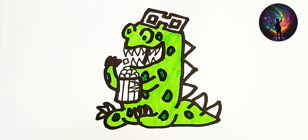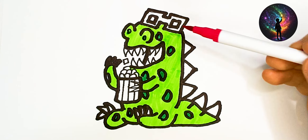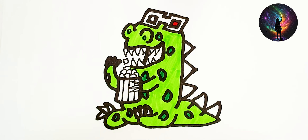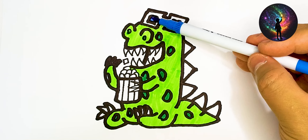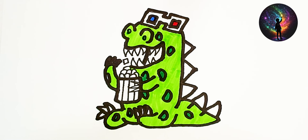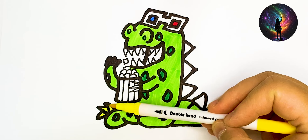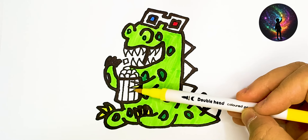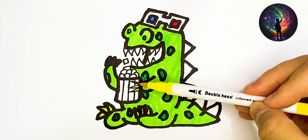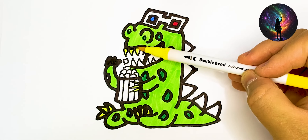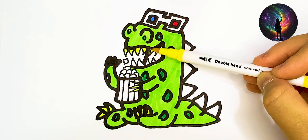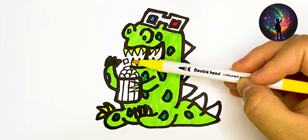Old MacDonald had a farm, E-I-E-I-O. And on his farm he had a dog, E-I-E-I-O. With a here and a there, here, there, everywhere. Old MacDonald had a farm, E-I-E-I-O.